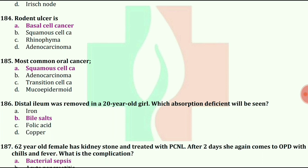62-year-old female has kidney stone and treated with PCNL. After 2 days she comes to OPD with chills and fever. What is the complication? The answer is bacterial sepsis.